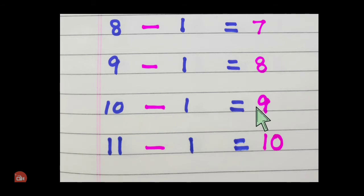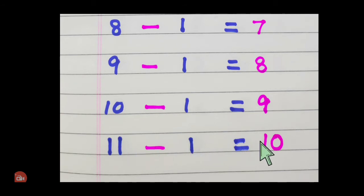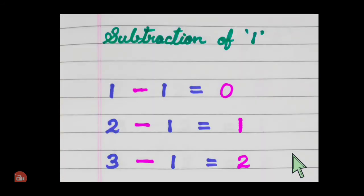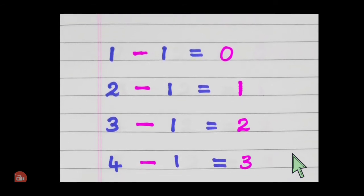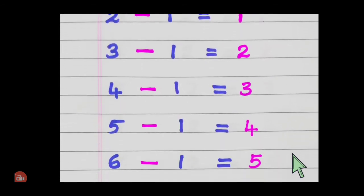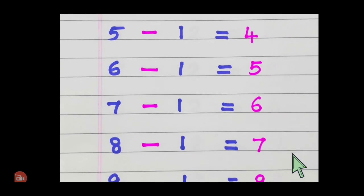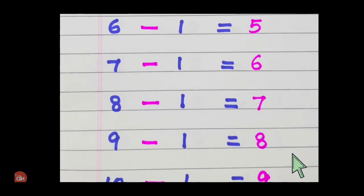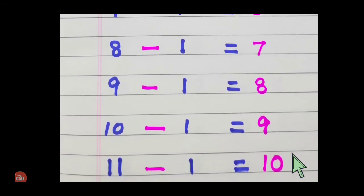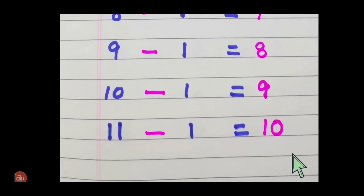Eleven minus one equals ten. Ok, let's say it now faster. One minus one zero, two minus one one, three minus one two, four minus one three, five minus one four, six minus one five, seven minus one six, eight minus one seven, nine minus one eight, ten minus one nine, eleven minus one ten.